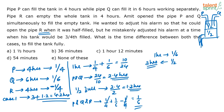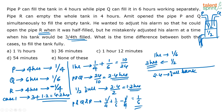But what Amit actually did was open pipe R only when the tank was 3/4 full. When will the tank be 3/4 full? In 2.4 hours, P and Q fill the full tank, so 3/4 of the tank will be filled in 2.4 times 3/4, which equals 1.8 hours. So P and Q can fill the tank to 3/4 of its capacity at 1.8 hours.